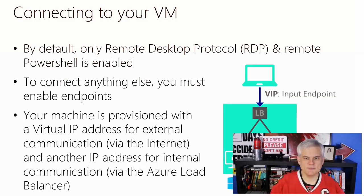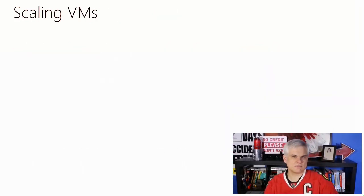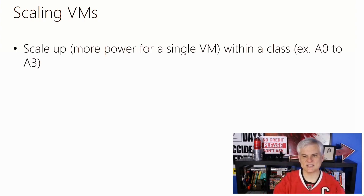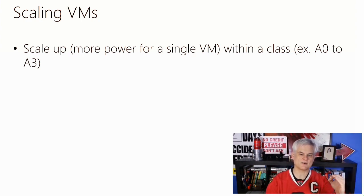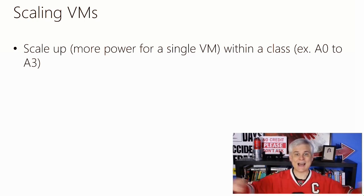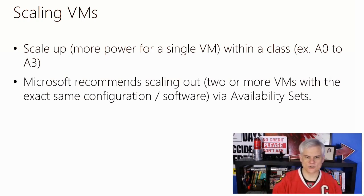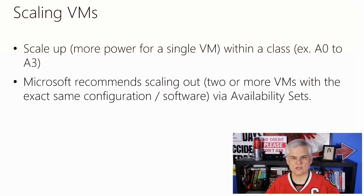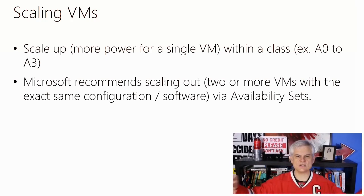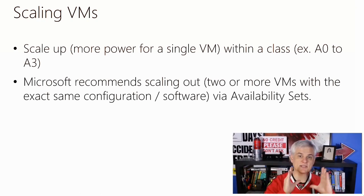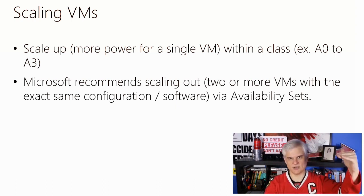I briefly mentioned autoscaling as a feature of the standard service tier. Let's talk about the Azure VM's scaling story. First of all, you can scale up within a given class and tier of servers — for example, I can scale an A0 to A3 just by selecting it from a drop-down list box. However, Microsoft recommends that you scale out rather than scaling up. In other words, you should choose to have additional servers with the same basic configuration instead of beefing up a single server.